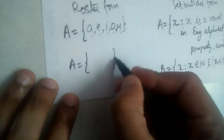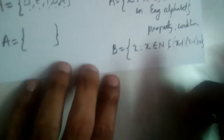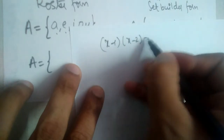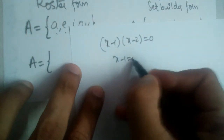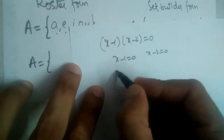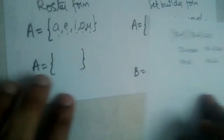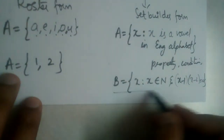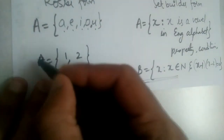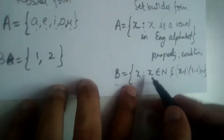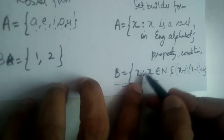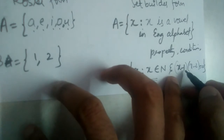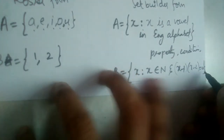If we want to write that in roster form, we solve (x−1)(x−2) = 0, which gives x−1 = 0, so x = 1, and x−2 = 0, so x = 2. Therefore B = {1, 2}. The set builder form is read as: x such that x belongs to the natural numbers and (x−1)(x−2) = 0.